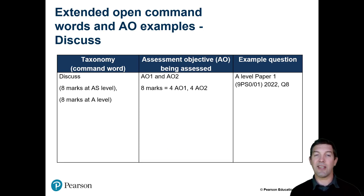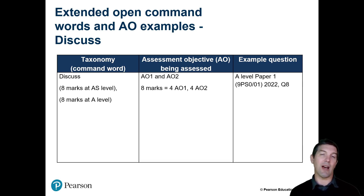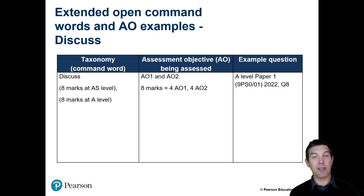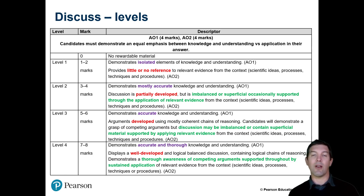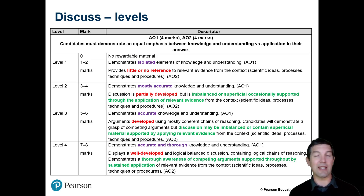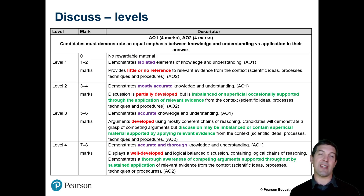A quick look at 'discuss' — this is the odd one out, where there's no evaluation and no AO3. Students should definitely not give strengths and limitations here. The mark scheme does mention competing arguments, which will be relevant in some questions but not all. The best advice is that students shouldn't worry about competing arguments here — they don't need to give conclusions. They just need to write four marks' worth of knowledge and understanding of the psychology, and four marks' worth of applying it to the context.